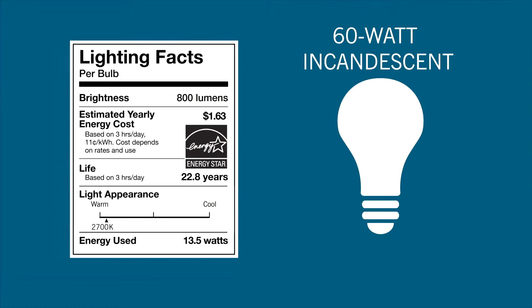A standard 60 watt bulb puts out around 750 to 850 lumens of light.